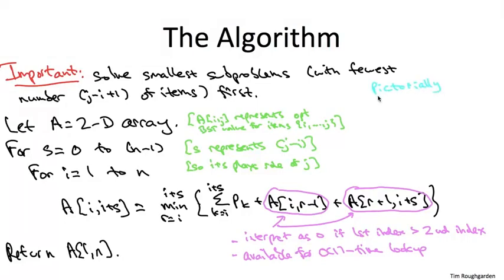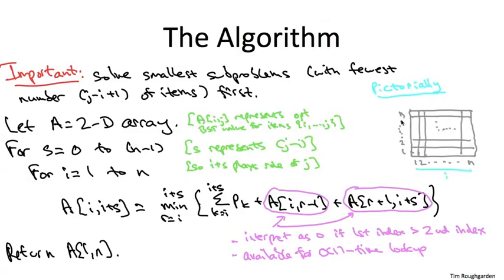Some students like to think about these double for loops pictorially. So let's imagine the 2D array is laid out as a grid. So imagine the x-axis corresponding to the indexed I, that is the first item in the set of items we're looking at, and the y-axis corresponding to J, the last item in the current set.